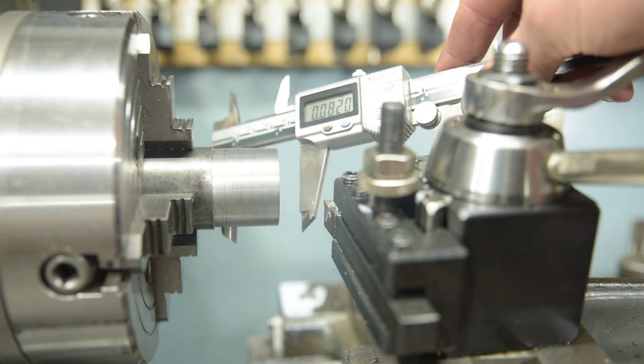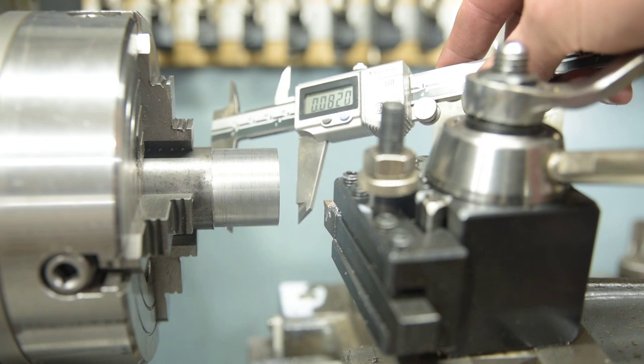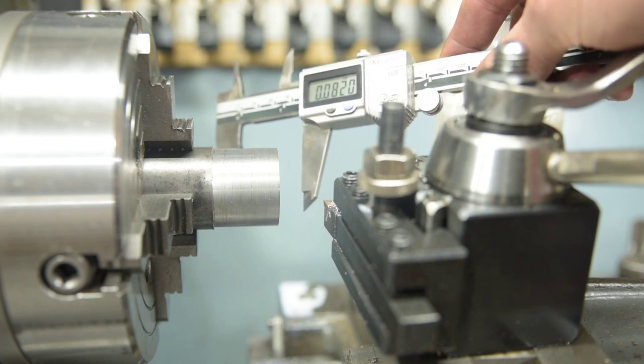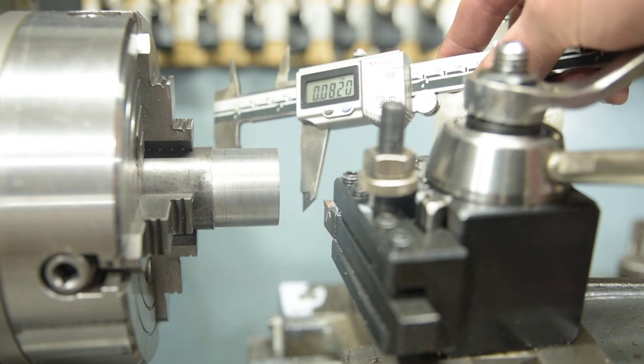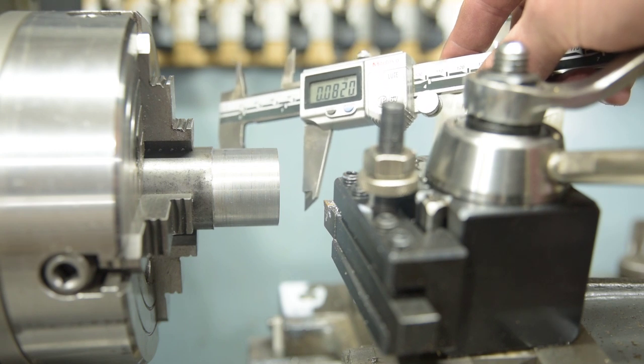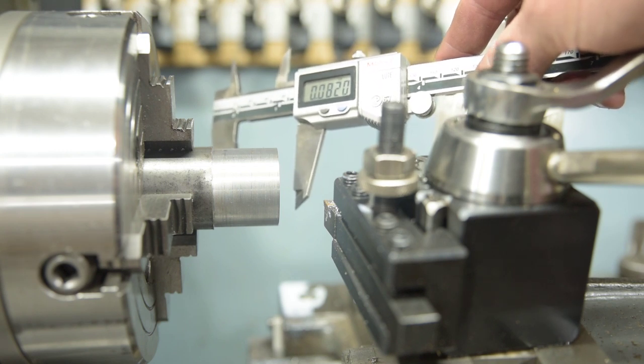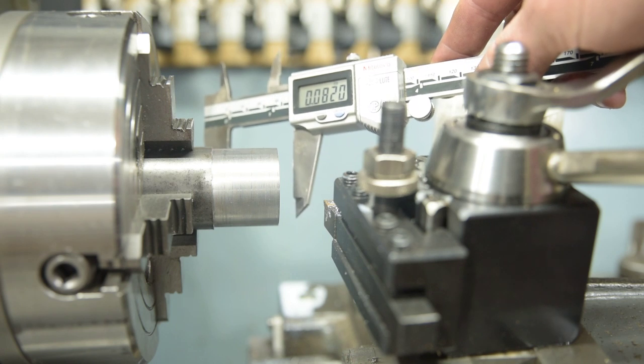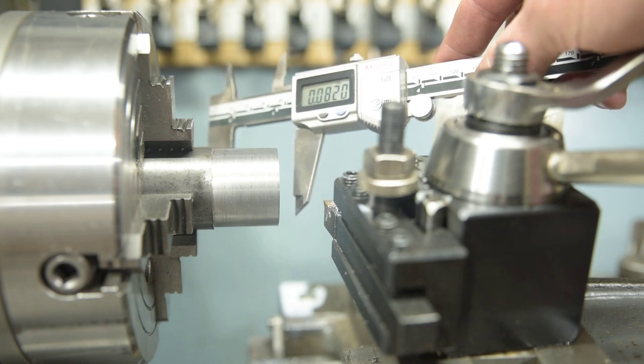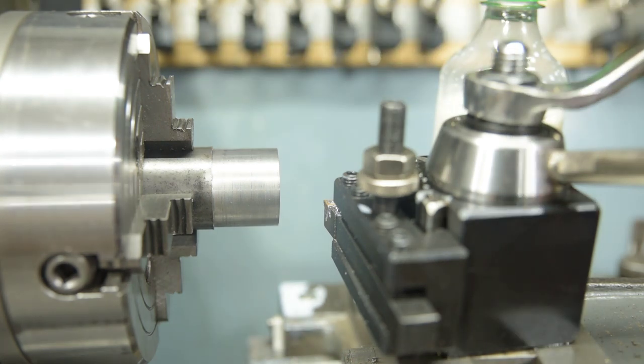So what have I got to take here? 41 thou a side is not divisible by 3 cleanly. So we'll take two 14s and a 13, and I'll sort of do this the slow, laborious way, and I'll take a measurement between each cut and show you where we're at. So the first cut I'm going to take is 14 thou. I'm going to dial that in on the cross slide, and we'll go from there.